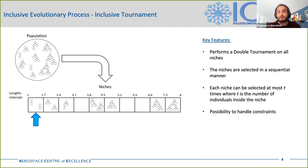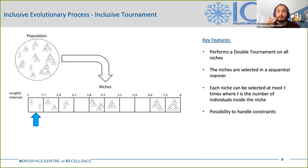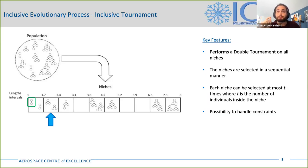Finally, the inclusive tournament is the last piece of the IGP, and it works in a straightforward way. The niches are selected in a sequential manner and on each niche, a double tournament selection is applied. A double tournament was chosen as the selection mechanism since it works also as an indirect bloat control operator. It works by selecting either the best individual or the smaller one according to a probability value from a pool of randomly chosen individuals. The key feature is that each niche can be selected at most t times, where t is the number of individuals inside it. This is done to reduce the probability of having clones of the same individual in the population.